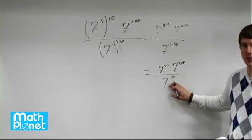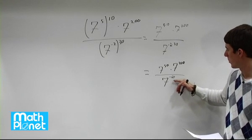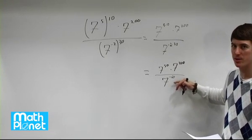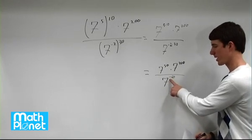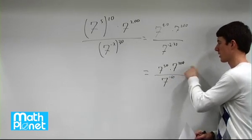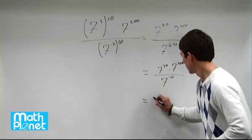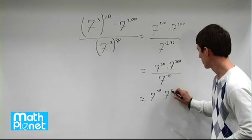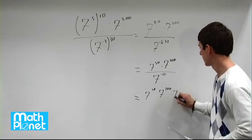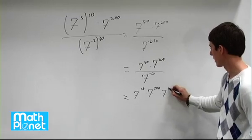Now we want to get everything on the same side of the fraction. We want to move this up. When we move a base up with a power, we change the sign of that power. The sign of that power right now is negative. We want to make the sign positive. So we have 7 to the power of 50 times 7 to the power of 200 times 7 to the power of positive 60 now.